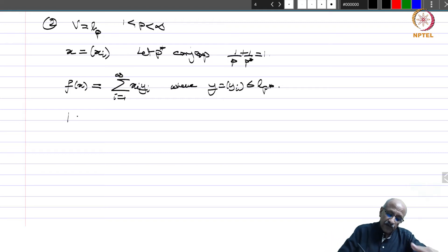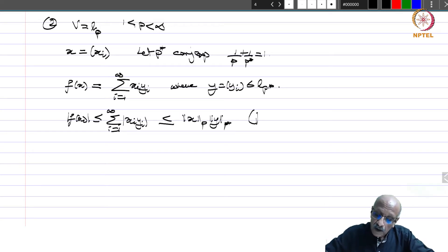Then this is a linear functional. First of all, is it well defined? It is because mod fx is less than equal to sigma i equals 1 to infinity mod x_i y_i, which is less than equal to by Hölder inequality norm x_p norm y_p star. This is Hölder's inequality. Therefore, this is not only well defined, it tells you that this is a continuous linear functional and norm of f is less than or equal to norm y in p star.